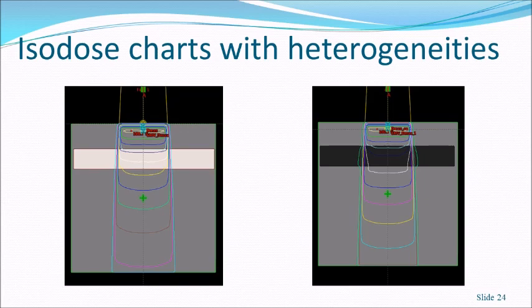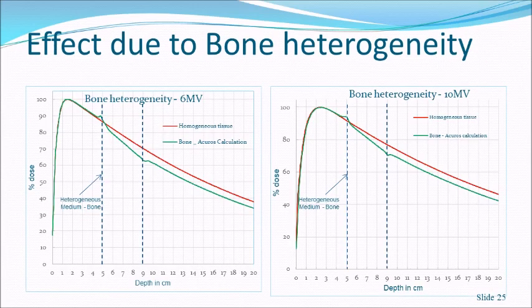To verify these effects, an experiment was performed using a treatment planning system with TrueBeam data. A 4 cm bone heterogeneity was placed at 5 cm depth, and separately a 4 cm lung-density heterogeneity was placed at the same depth, for both 6 MV and 10 MV beams. Depth dose curves were generated with and without heterogeneity to compare the effects.